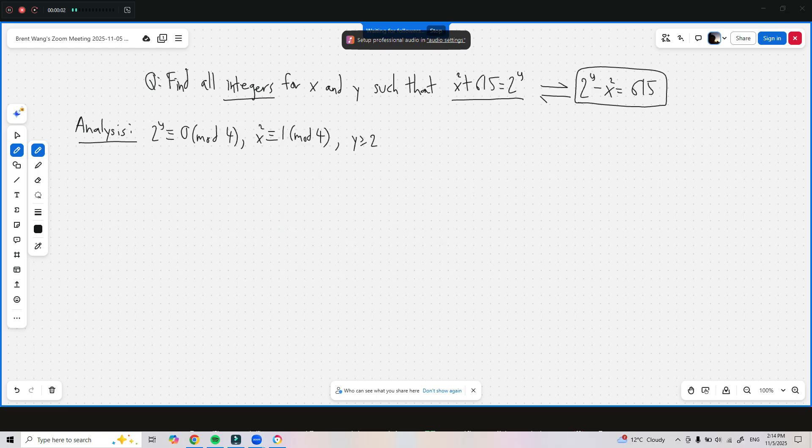All right, so I just cleared the board to make some space. I summarized what we found out earlier. 2 to the power of y is congruent to 0 mod 4, or 2 to the power of y is divisible by 4. x squared is congruent to 1 mod 4, where x is odd, and y has to be at least 2. So going back to that simpler question I showed you earlier, let's find out what 615 can be expressed as.